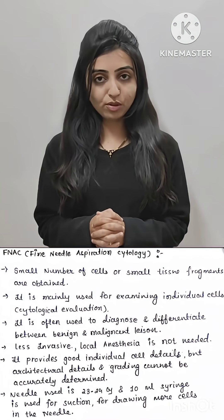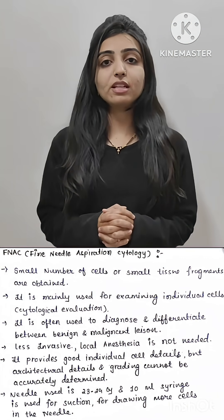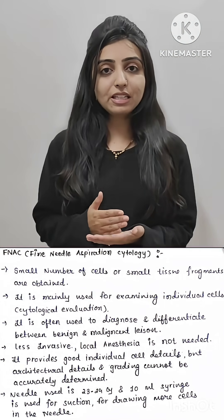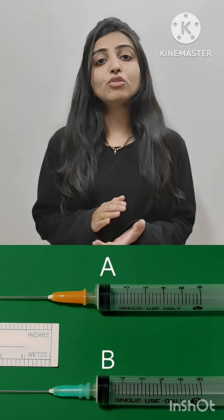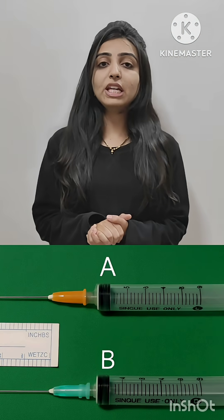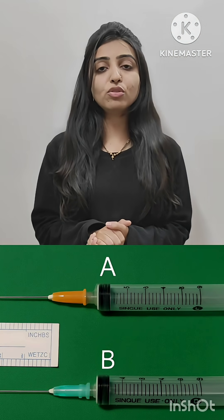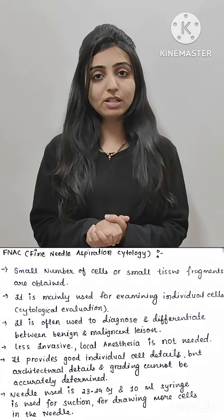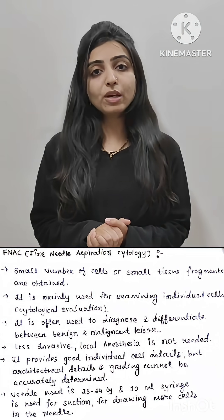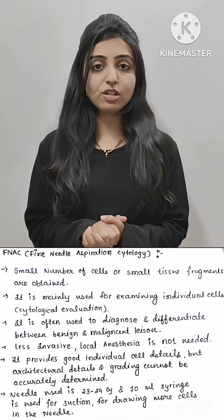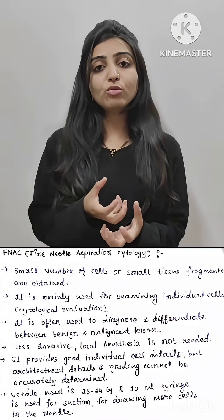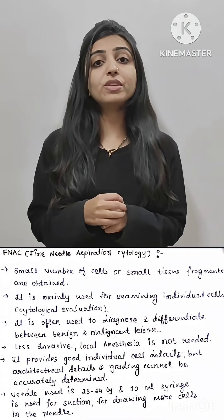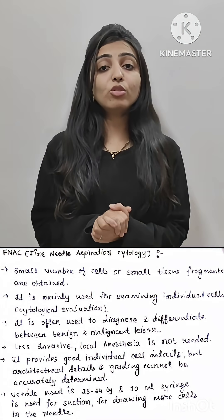First is FNAC. The full form of FNAC is Fine Needle Aspiration Cytology. For that we require a 23 to 24 gauge needle with a 10 ml syringe. We use a 10 ml syringe because we want more negative pressure, as we have to draw cells and tissue fragments from the swelling.